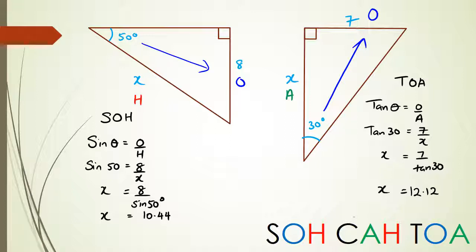And that's basically it, guys. Thank you for watching this video. If you have any questions, pop them in the comments below. Hopefully you understood how to find the missing side given a side and an angle. In the next video we'll be looking at how to find the missing angle given two sides. Thank you for watching.